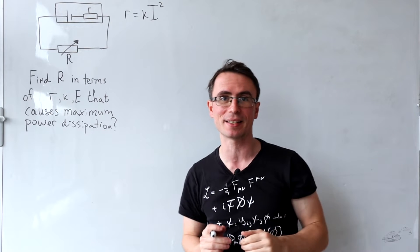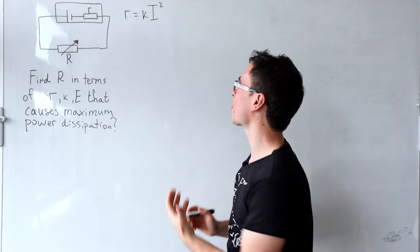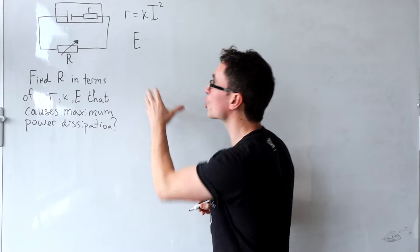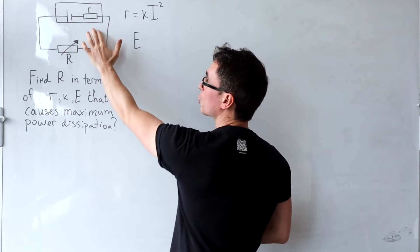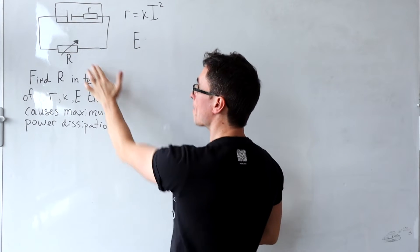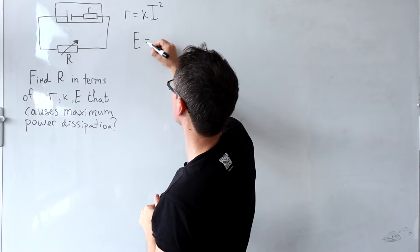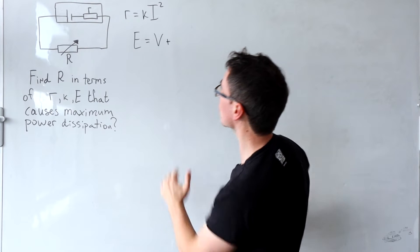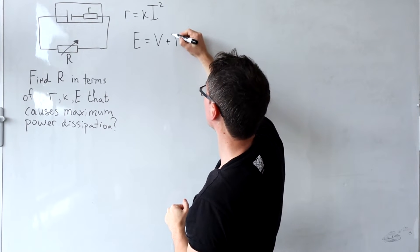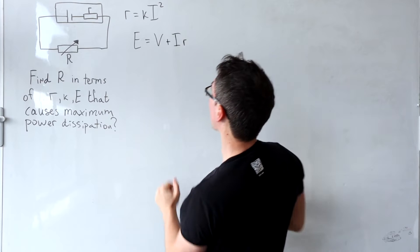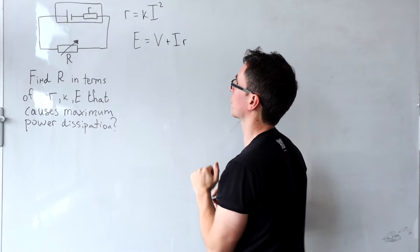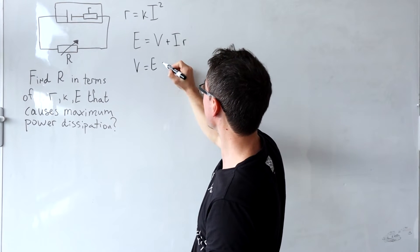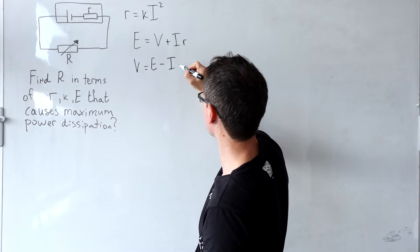Power is dissipated in the circuit and as always we're going to start our problem with something fundamental. We know that the EMF E will be the sum of the voltage dissipated due to internal resistance plus the voltage across the resistor. I'm going to call the voltage across the resistor V, and using Ohm's law, this will be equal to I times R, where I is the current and R is the internal resistance.